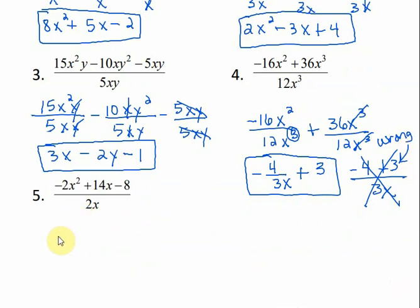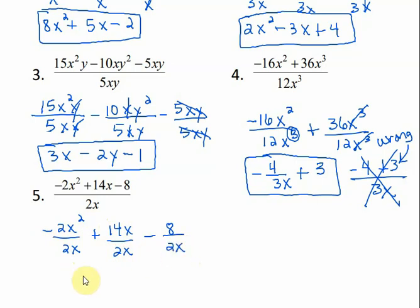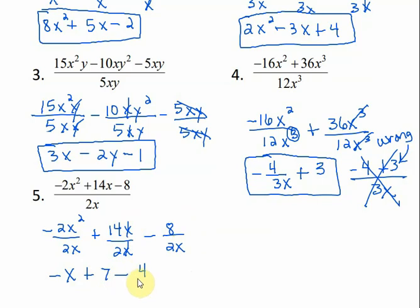Number 5: put 2x underneath each term. For the first term: negative 2 divided by 2 is negative 1, and x squared divided by x is x — so negative x. For the next term: 14 divided by 2 is 7, and those x's divide out. Minus: 2 goes into 8 four times. That x in the denominator — there's nothing to divide it with on top, so it stays where it's at. If you bring it up and write 4x, that's wrong. This is your answer.